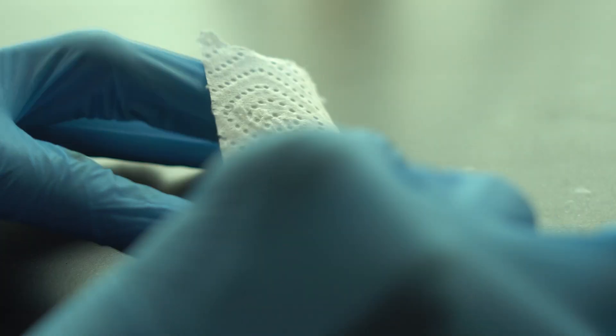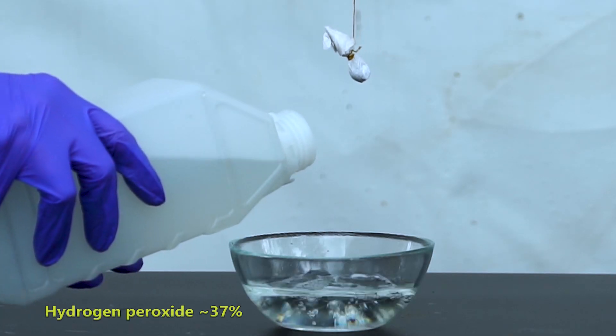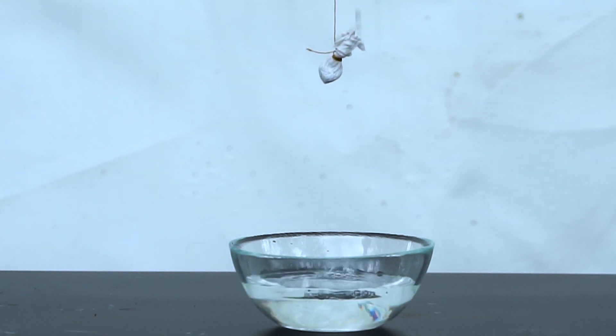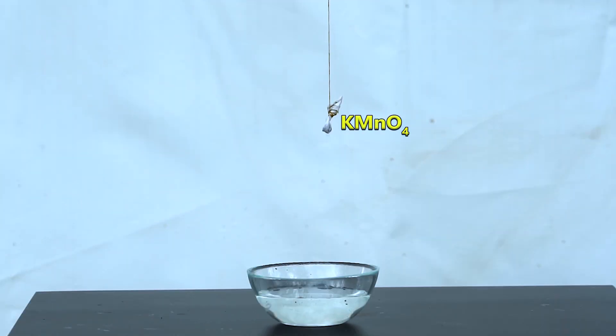I wrap potassium permanganate in a paper towel and tie it to a thread so that it reacts with hydrogen peroxide first, and after a violent reaction with the release of oxygen begins, I dip the potassium there.